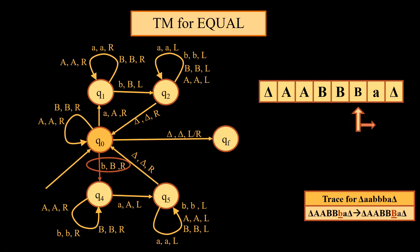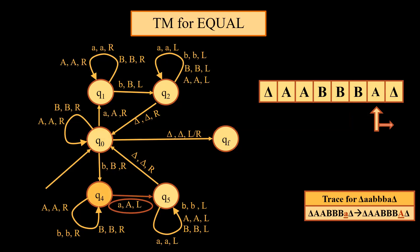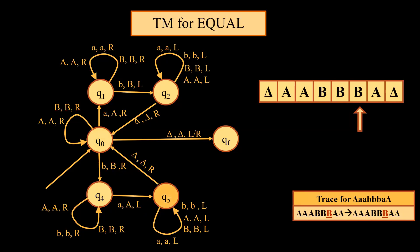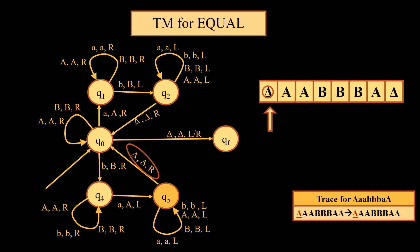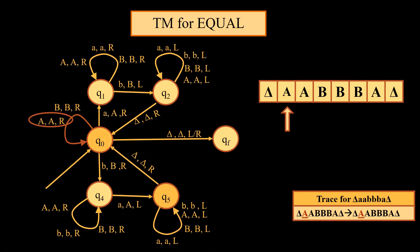Now the head has reached small b. The moment it comes across small b, the Turing machine transitions from Q0 to Q4. Small b is converted into capital B. The search for A begins — the very next symbol is A. That symbol is converted to capital A and we start traversing towards the left. While traversing left, we will not change any input and will just try to find the end marker delta, crossing all capital A's. We come to delta, and at this point we start moving towards the right to convert any remaining small a or small b.